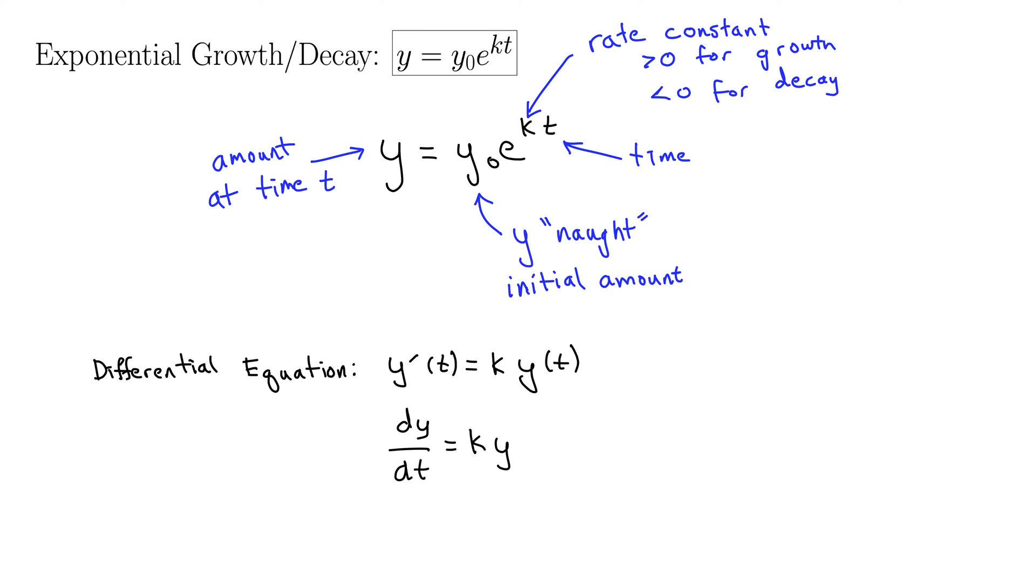Well, this is something called a separable differential equation. You can think more about that in calc 2. I just want to solve this thing. So let's get all the y's on one side. So we have dy over y equals k dt. All right, and then we integrate up on both sides.